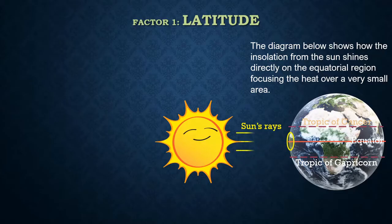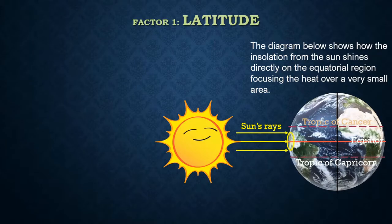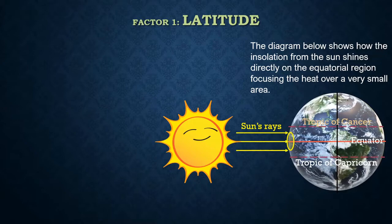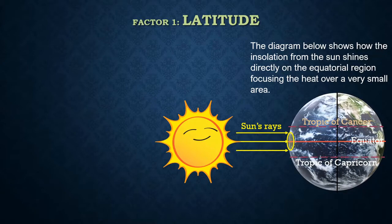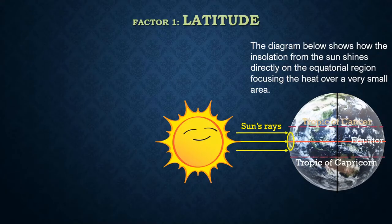This diagram shows how insolation from the sun approaches the earth in parallel beams. At the equator, these sun rays strike the surface of the earth at right angles, meaning the sunlight is focused or concentrated on a very small area. This direct sunlight goes as far as the Tropic of Capricorn at 23.5 degrees south and the Tropic of Cancer at 23.5 degrees north. The region between these two tropics is called the tropics or the equatorial region. You can see how, when the earth spins on its axis, the sunlight strikes directly all along the equator and the tropical regions.